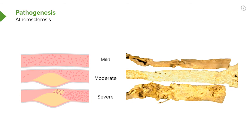Here we see three examples. You can see mild atherosclerosis at the top, moderate in the middle, and very severe at the bottom. The bottom one has lots of calcification and lots of scar tissue. You can also see the yellow color, which comes from the deposition of cholesterol in the artery wall.